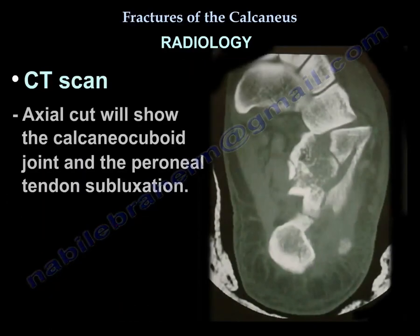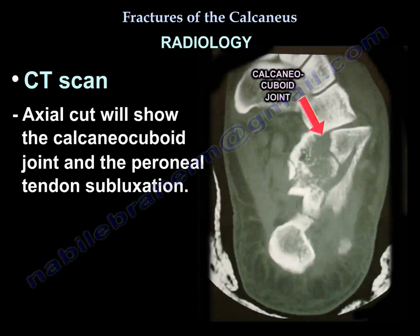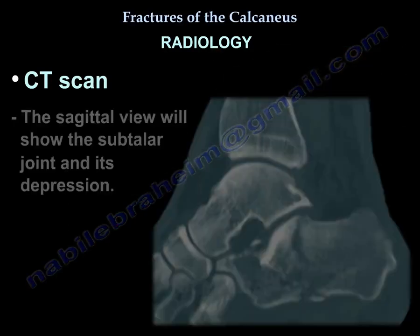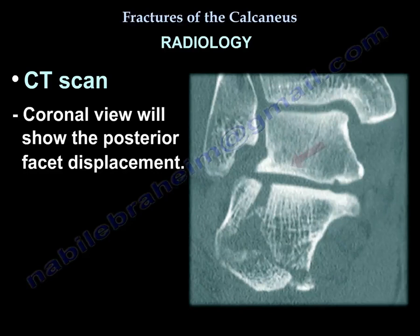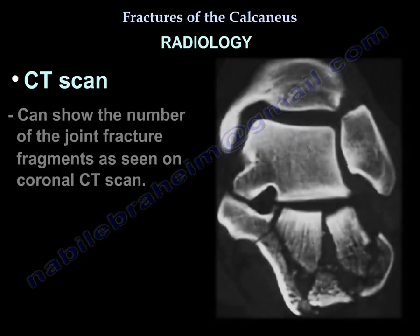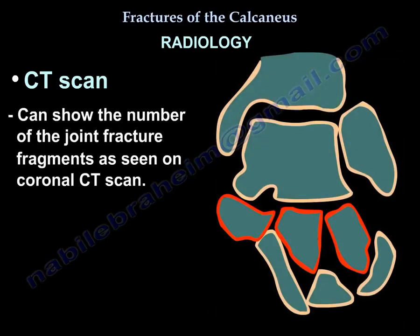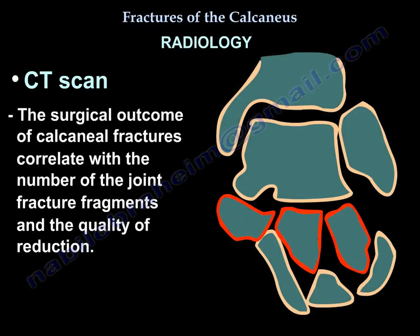On CT scan: the axial cut shows the calcaneocuboid joint and peroneal tendon subluxation. The sagittal view shows the subtalar joint and its depression. The coronal view shows posterior facet displacement and the number of joint fracture fragments, which correlates with surgical outcome along with the quality of reduction.